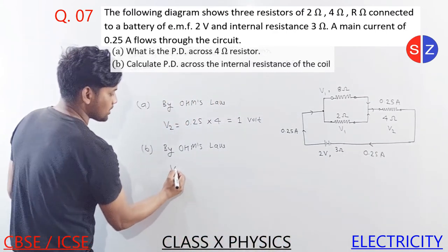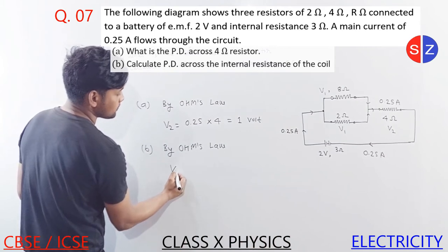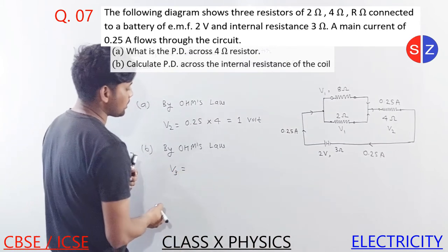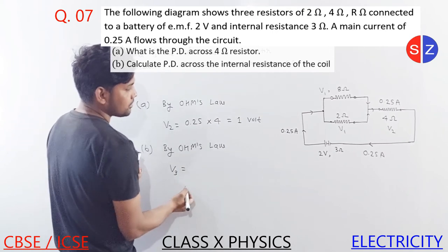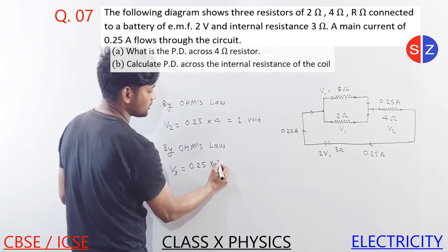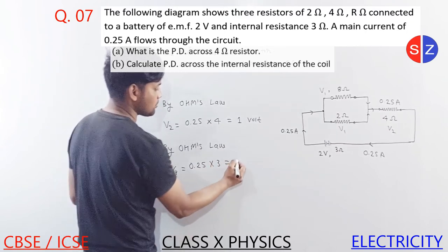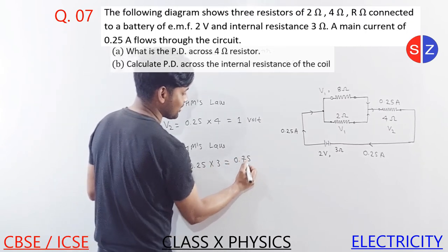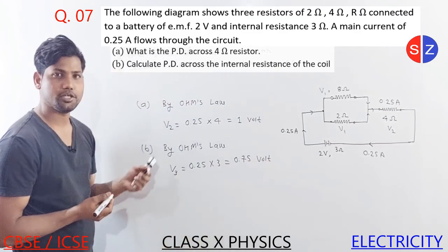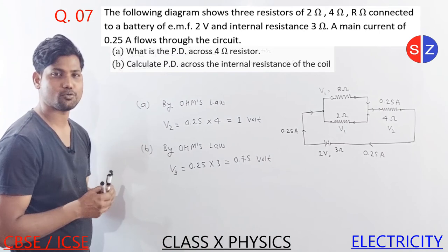We have to find the voltage across this. The voltage V3 - we need to find V3. It is current times resistance. The current is 0.25 and the resistance is 3. Here you will find 0.75 volt. It was very easy and very important.